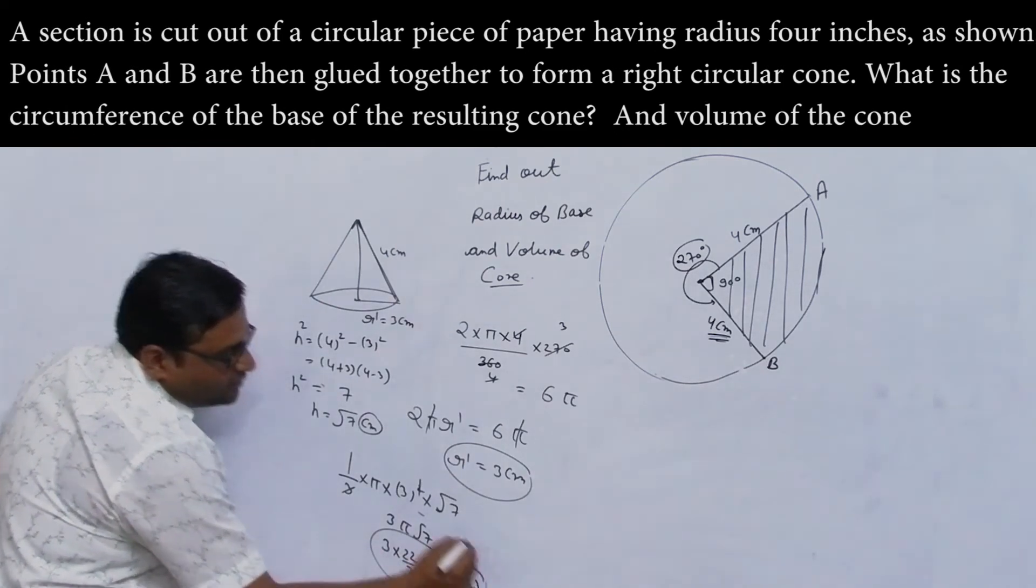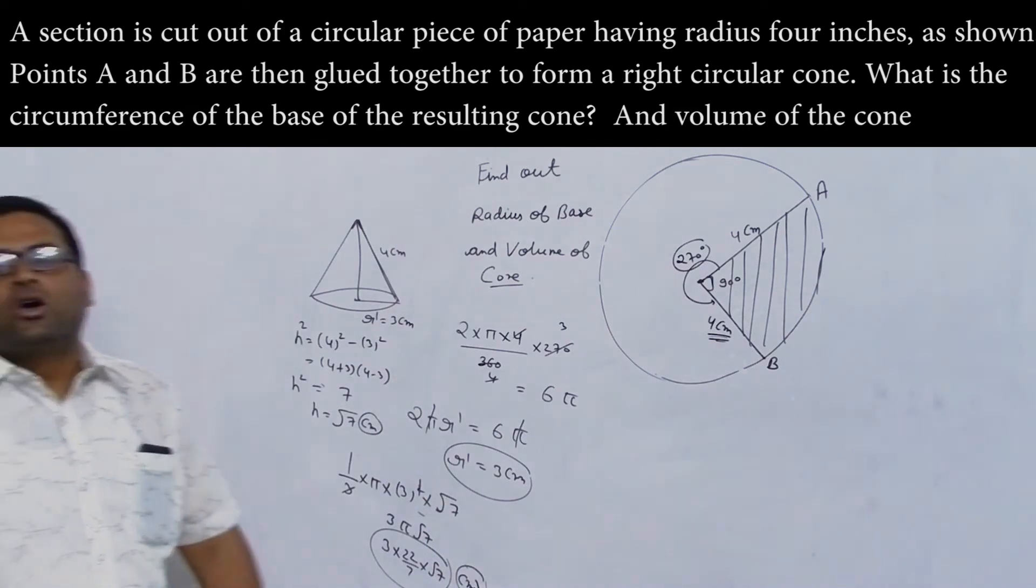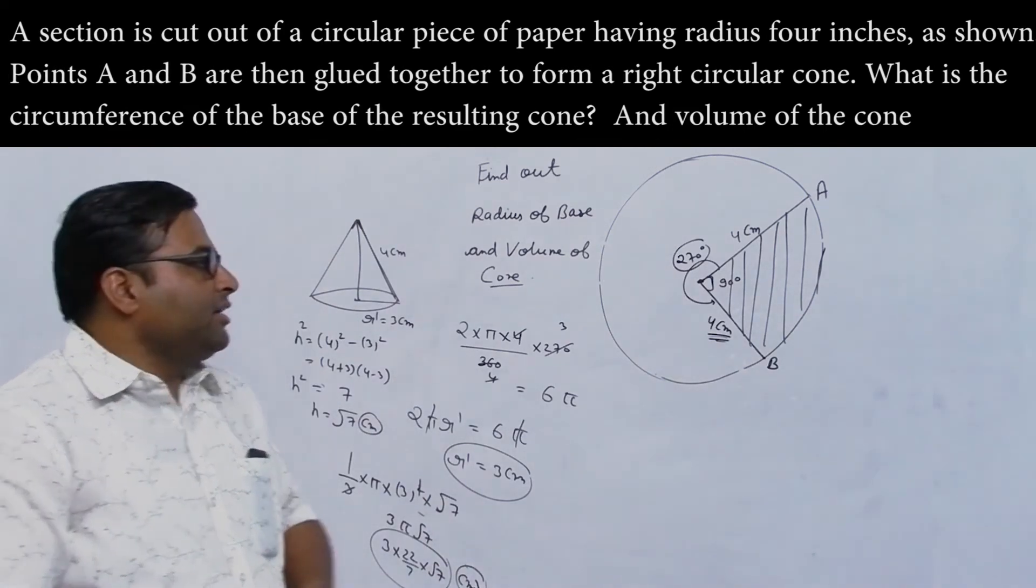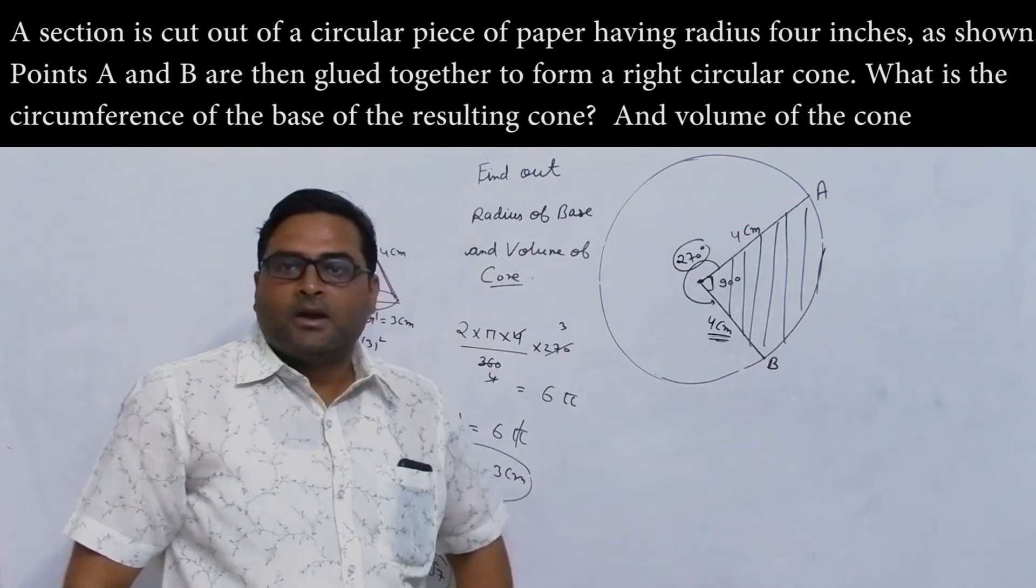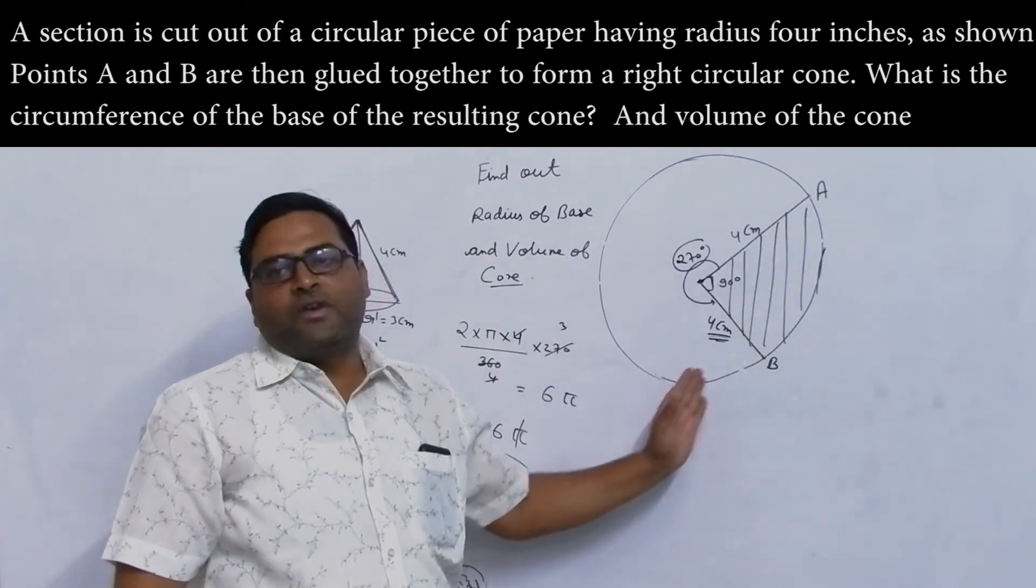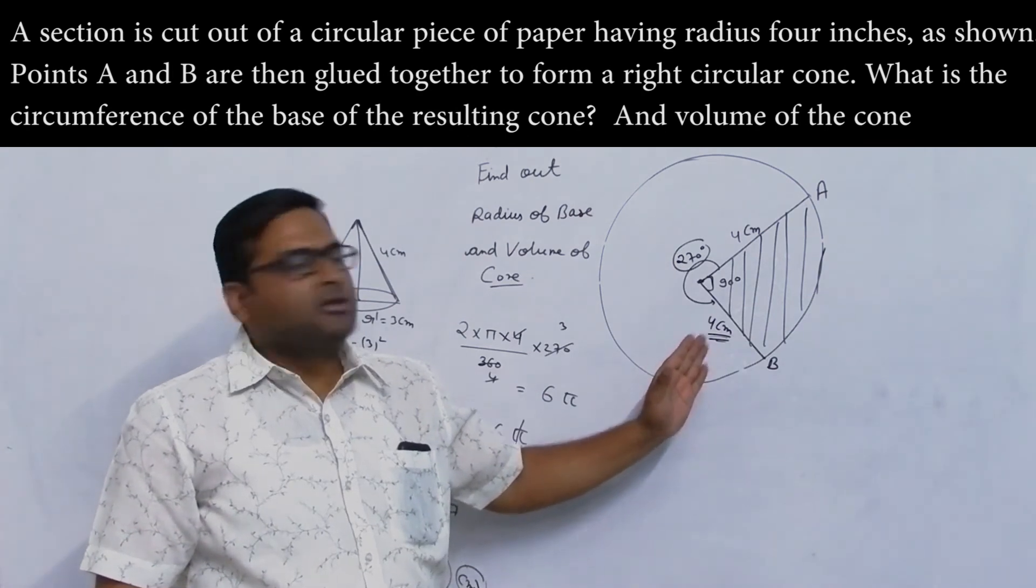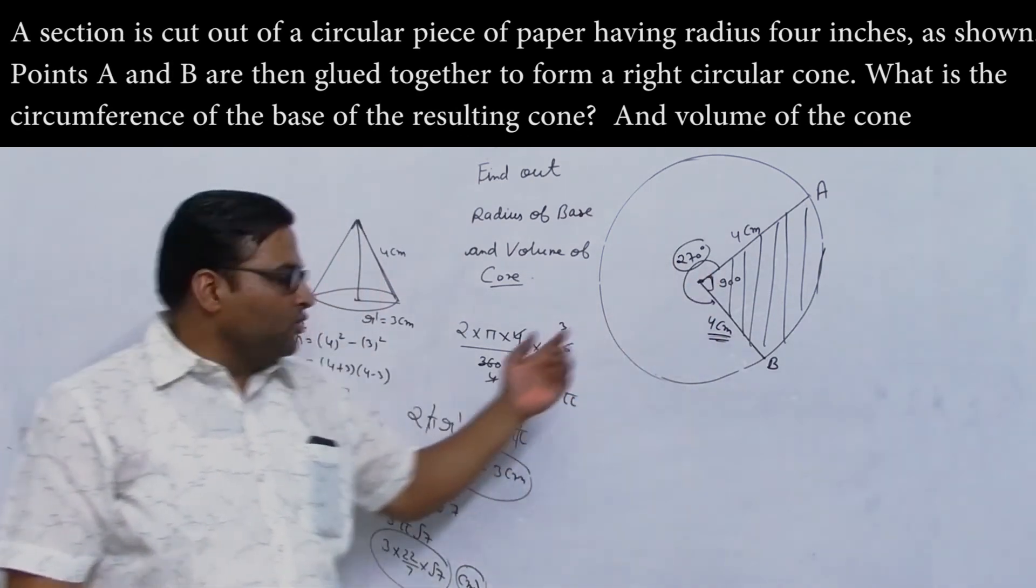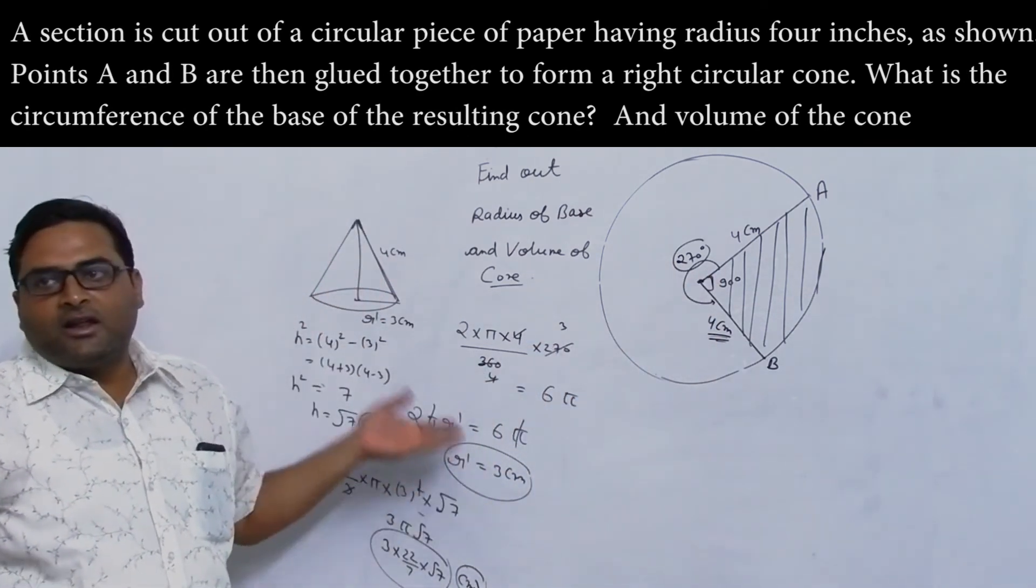So volume is 3π root 7. This is your final answer. This is the volume of the cone created by cutting this piece of paper. The basic concept is that first you found the circumference, the 270 degree cut piece.